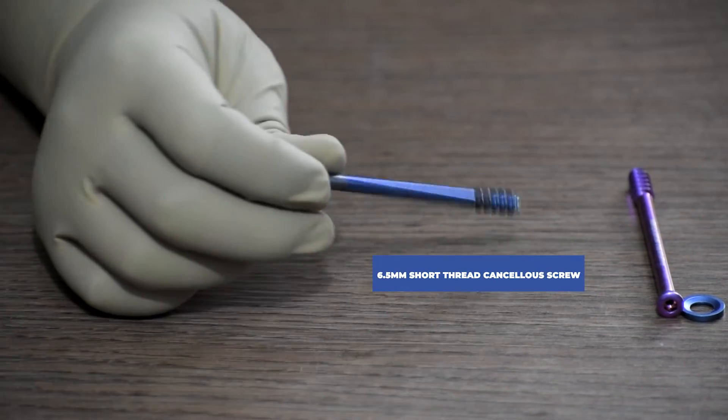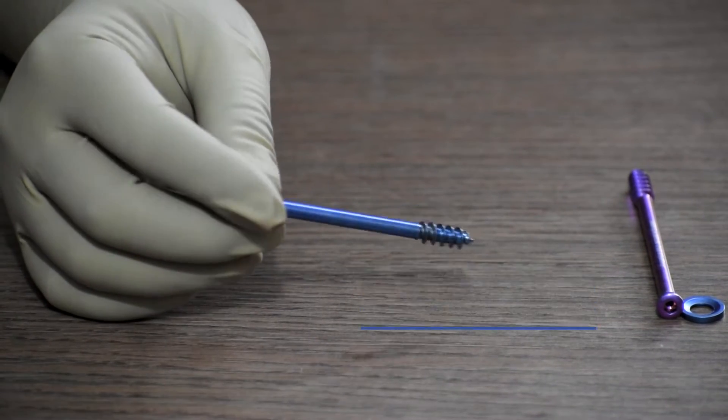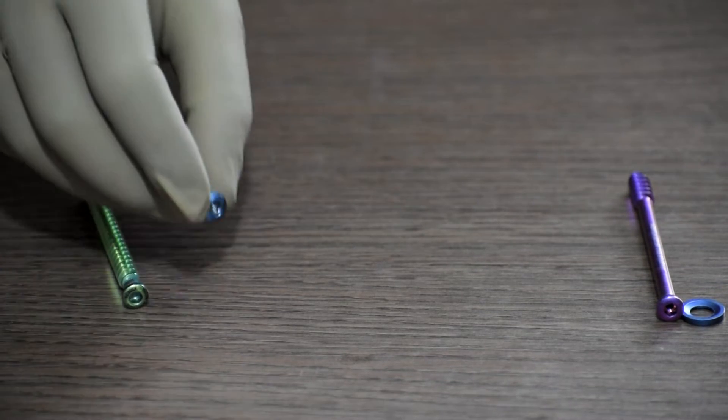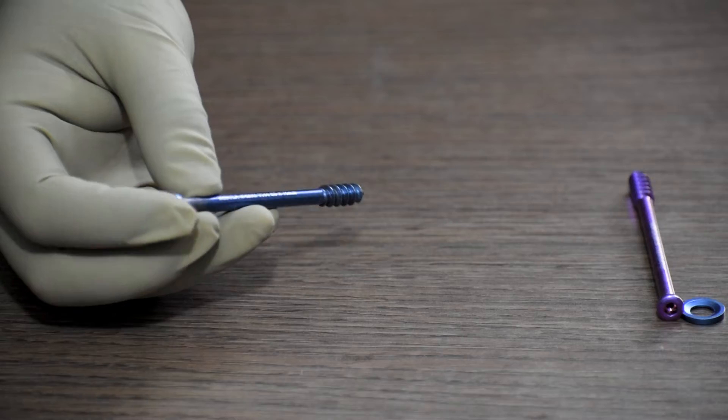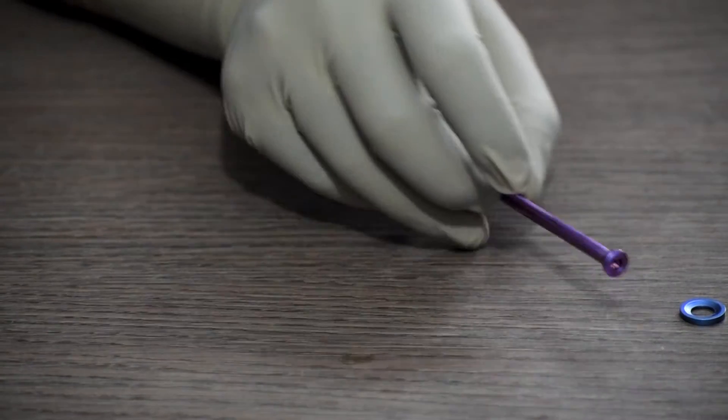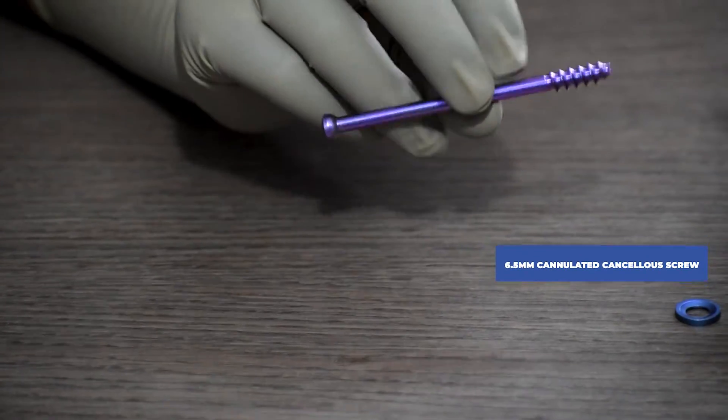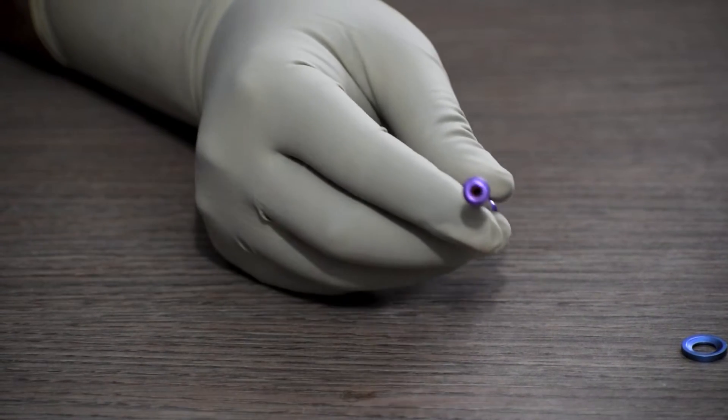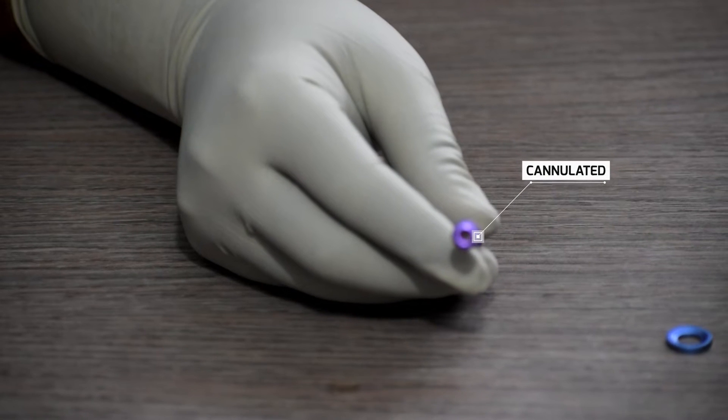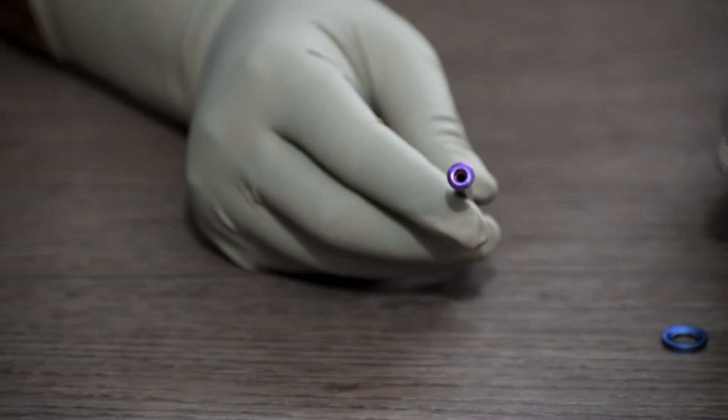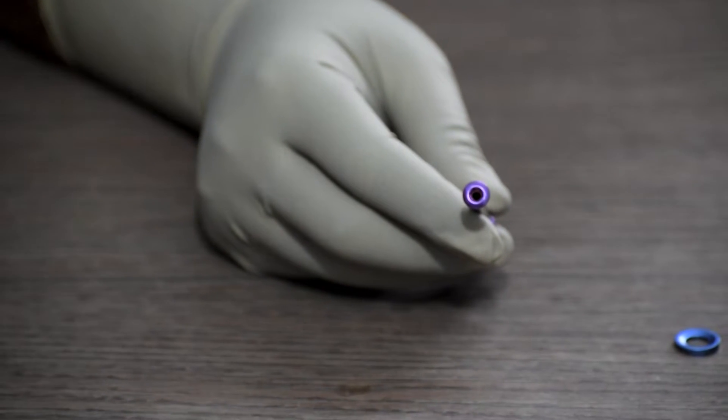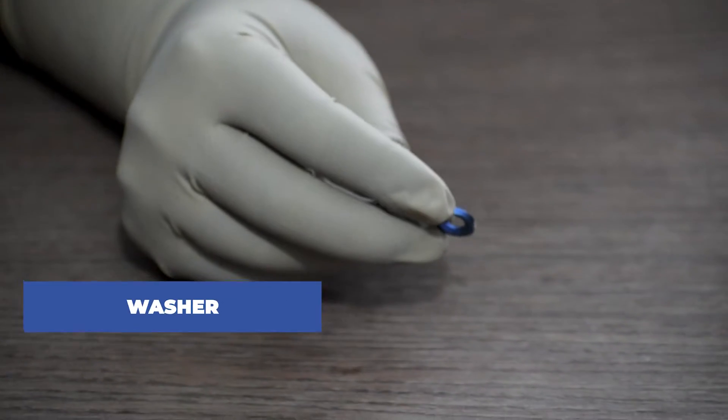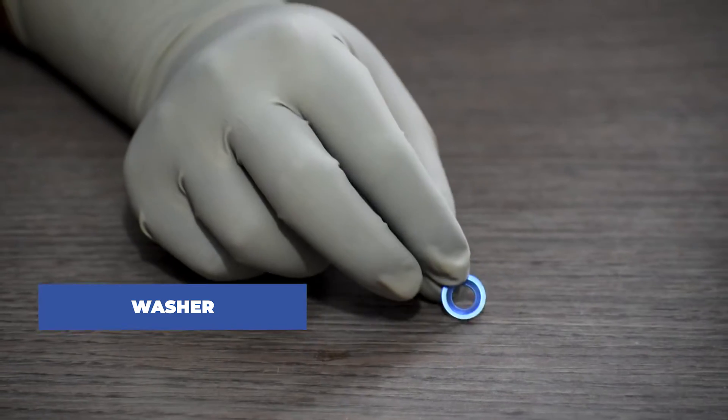This one is a 6.5mm short thread cancellous screw with 16mm thread. As you can see, this screw is cannulated, which means it has a hollow central shaft. Washer is provided with all the screws that helps in better compression.